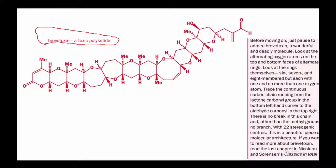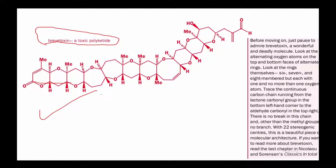There is a continuous carbon chain running from the lactone carbonyl group in the bottom left corner to the aldehyde, with no break in the chain and no branches other than methyl groups. With 22 stereogenic centers, brevetoxin is a beautiful piece of molecular architecture. If you want to read more about brevetoxin, read the last chapter in Nicolaou and Sorensen's classic work on total synthesis. You should appreciate how big and complex molecules can be obtained from natural product resources.